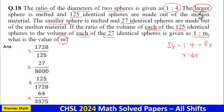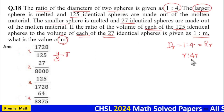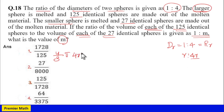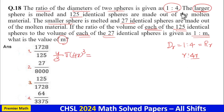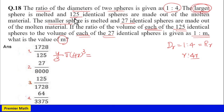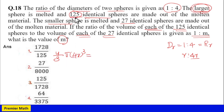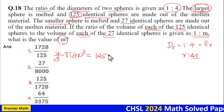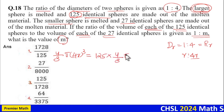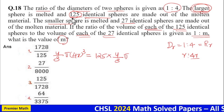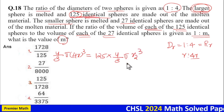The volume of the large sphere is (4/3)π(4r)³, which equals (4/3)π × 64r³. From this large sphere, 125 identical spheres are made. So the volume of the large sphere equals the volume of 125 identical spheres: 125 × (4/3)π × r2³, where r2 is the radius of each of the 125 identical spheres.